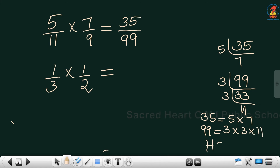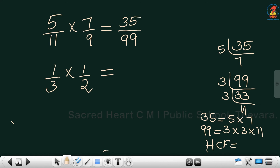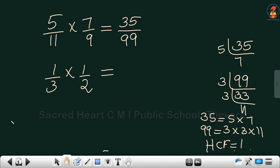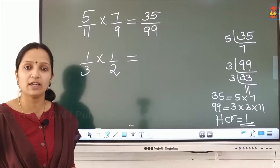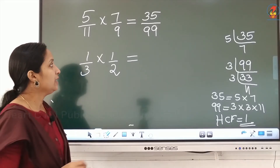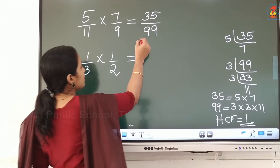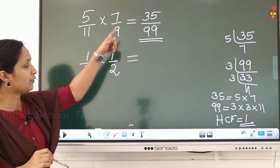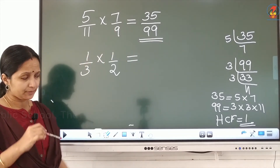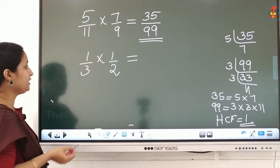There is no common factor here, so the HCF is 1. If there is no common factor, the HCF is 1. Therefore the answer remains as it is: 35 by 99.